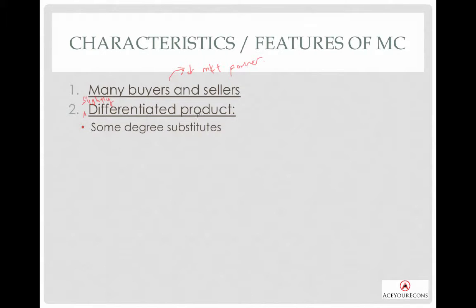The goods you see outside are slightly differentiated in that there is a huge degree of similarity, but they differ in one way or another. For example, chicken rice: I typically favor stores that serve good chili. Although there are many chicken rice stores, only a few serve good chili. The chicken rice is differentiated in terms of fragrance, texture of the chicken, and the chili itself — but the product is still essentially the same. So it is slightly differentiated, and because of this, sellers still retain some market power.